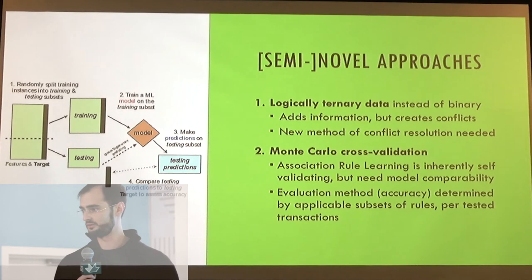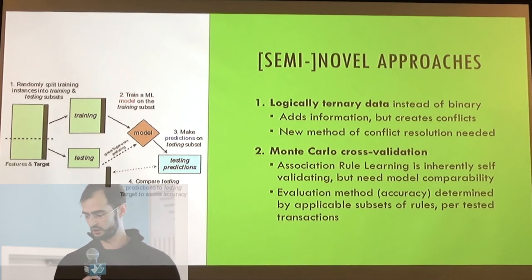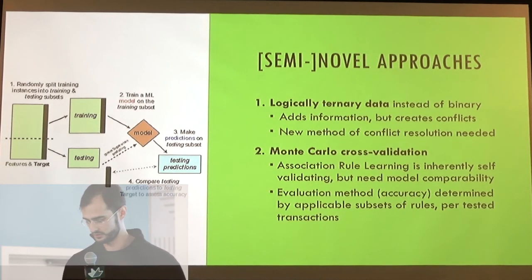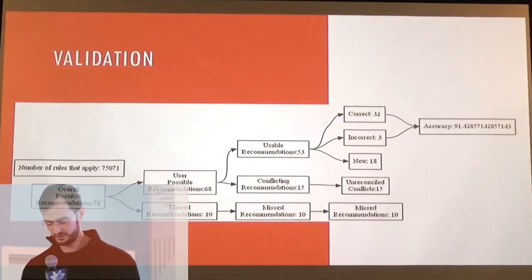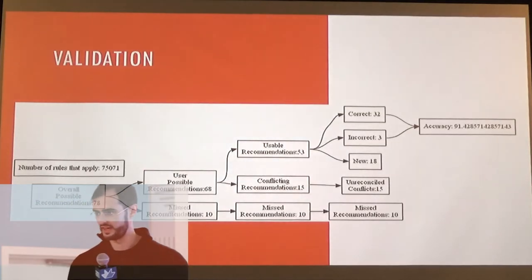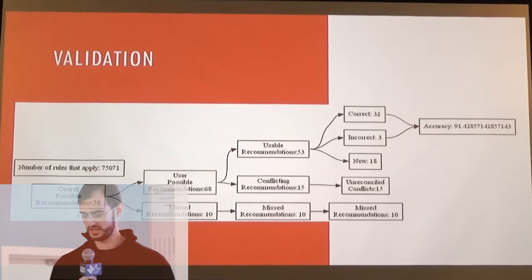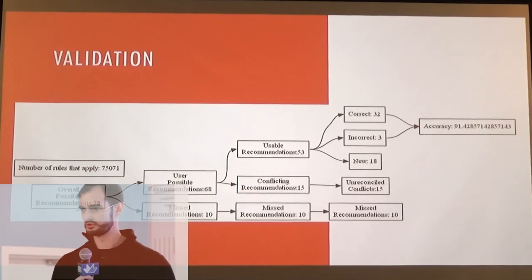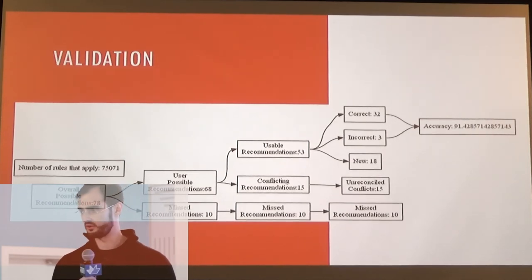Second, association rule learning is inherently self-validating, which is great, but it didn't help me compare my model to other models to see which was better. So I used Monte Carlo cross-validation to determine accuracy so that I could compare it. For each person I tested, I found all of the rules that applied to that person, resolved conflicts where possible, and figured out how many were correct and incorrect to determine the model's accuracy.